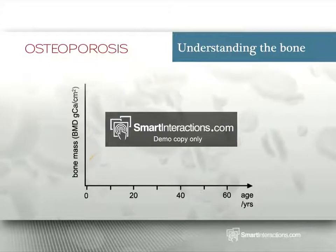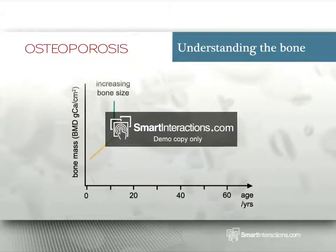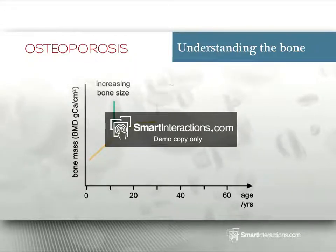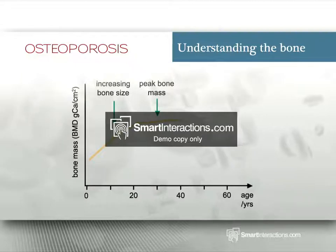During childhood and teenage years, new bone is added faster than old bone is depleted. This bone remodeling process takes place until maximum bone density and strength is reached, around age 30.